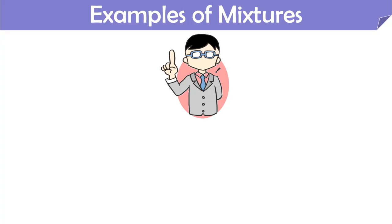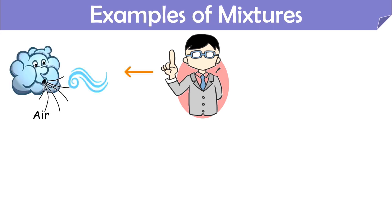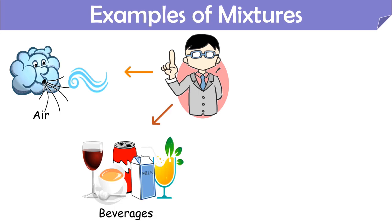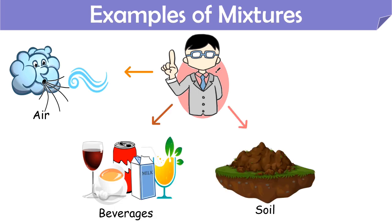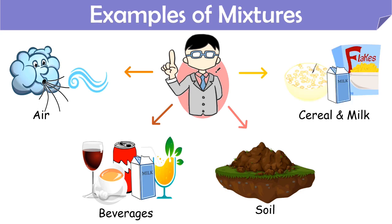Moving on to some common examples of mixtures present around us: air is a mixture of many gases present in uniform proportion. Beverages like cola, fruit juice, tea, coffee, etc. are also mixtures. Soil is also a type of mixture that consists of several different components such as sand, mud, gravels, pebbles, rocks, organic debris, etc. Cereals and milk are also examples of mixtures.